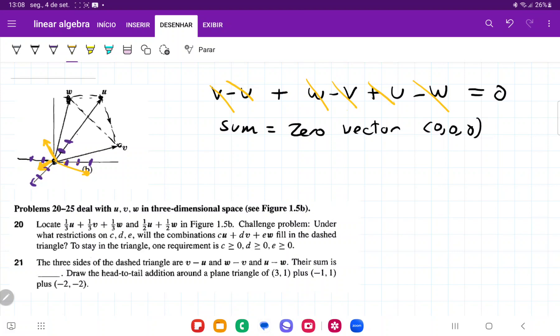So what happens when we draw the tip to tail addition? Well, I'm going to have to move these. So what I'm going to do here is I'm going to first move the first vector and put it here. And then we're going to take the third vector and put it tip to tail here. And we can see, if I put it tip to tail, that the result is just going to put me back at zero.